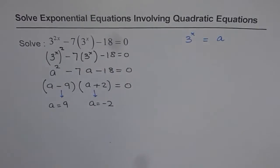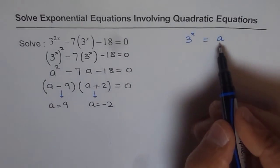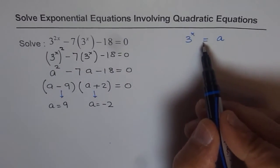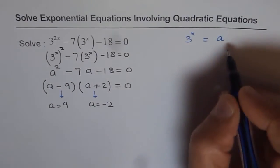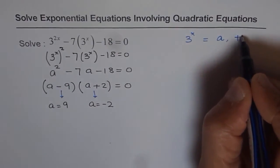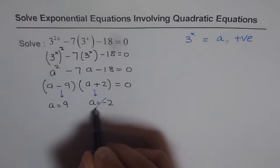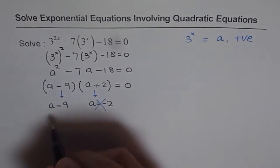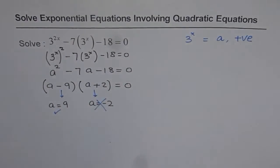Now, what are we looking for? We are looking for a, which is representing 3 to the power of x. Now, 3 to the power of x is always positive, correct? So this is not a valid solution for us, whereas this one is valid.